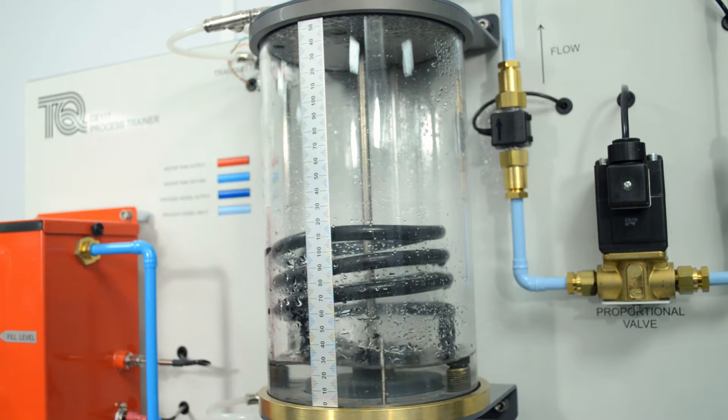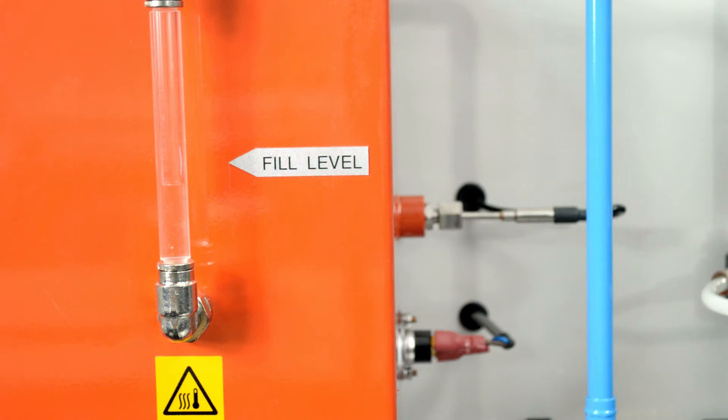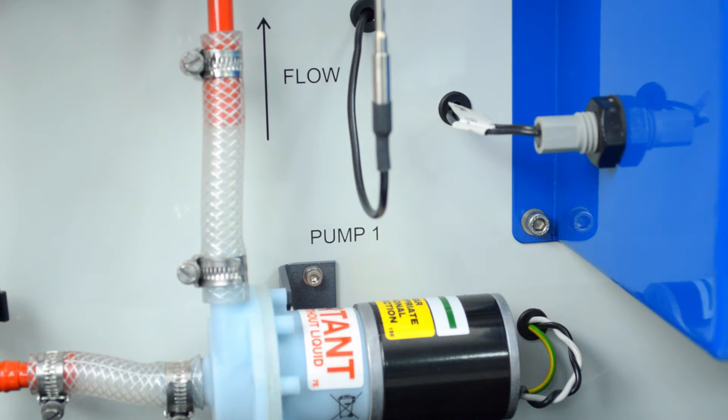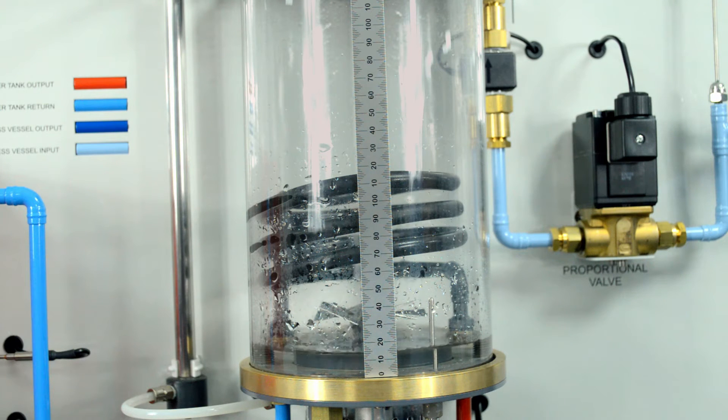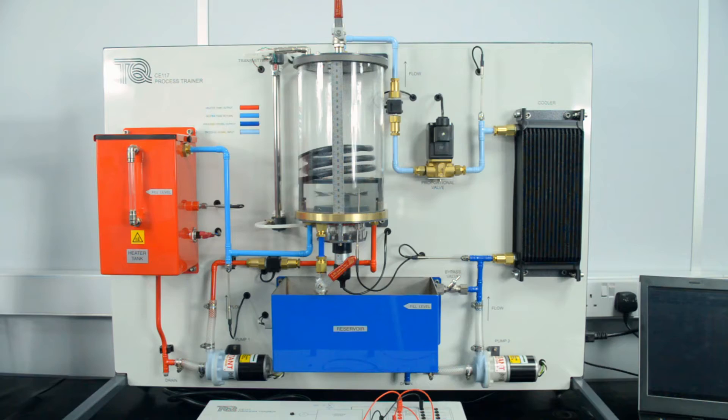The experiment module includes two loops linked by the heat exchanger in the process vessel. One loop is the heating loop with a heater tank circulation pump connected to the heater exchanger coil in the process vessel.